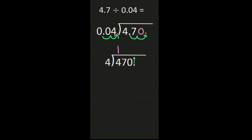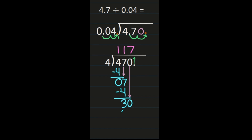Let's just start dividing. 4 divided by 4 is 1, so my 1 goes over the 4. Then 1 times 4 is 4, I subtract and get 0. Next I bring the 7 down and start dividing again. 7 divided by 4 is 1. 1 times 4 is 4, and subtracting gives me 3. The 1 goes above the 7 because that's where I was in my division steps. Next I bring the 0 down: 30 divided by 4 is 7. 7 times 4 is 28, and 30 minus 28 is 2.